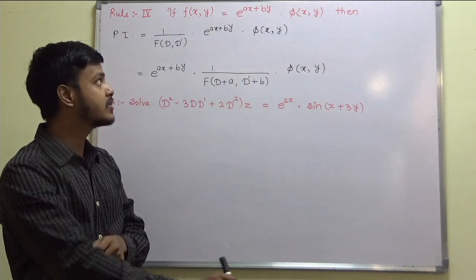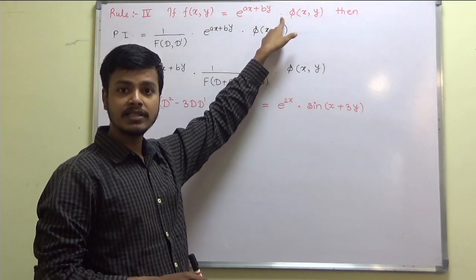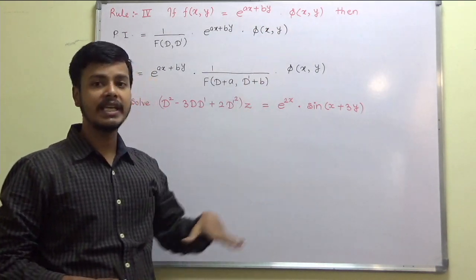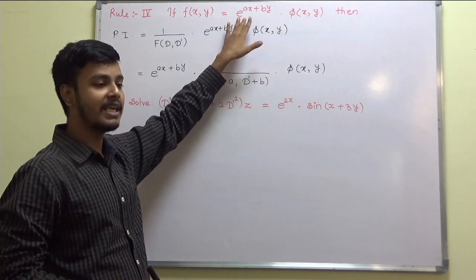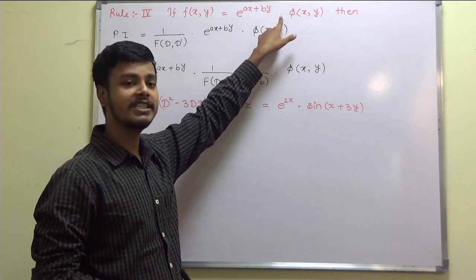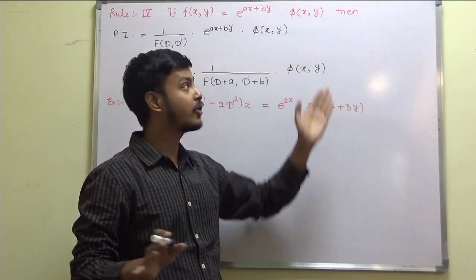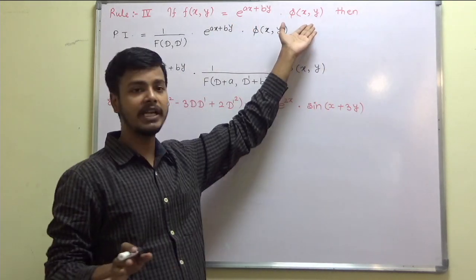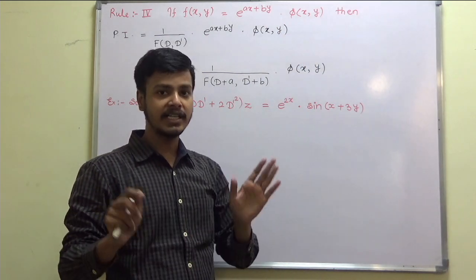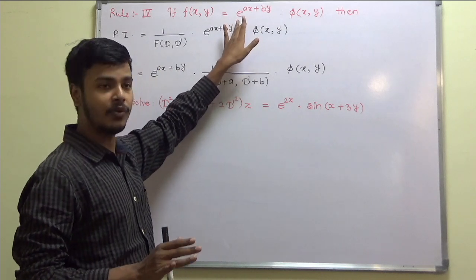Don't be confused with the dot product and the plus. What students do in the examination is — the problem is on case number 4, and instead of a dot they write plus, then apply rule 1, rule 2, or rule 3 depending on φ(x,y). That is not the case. This is a problem of case number 4.